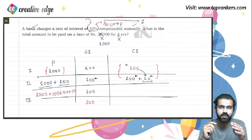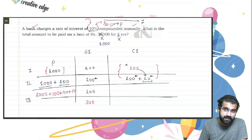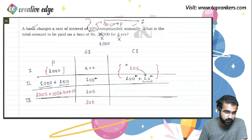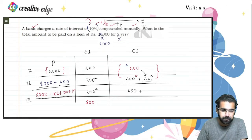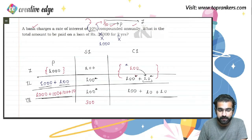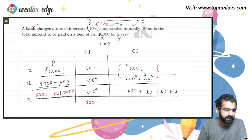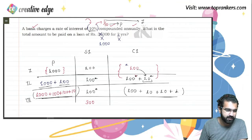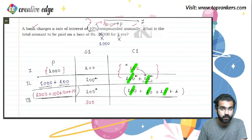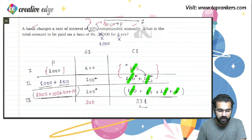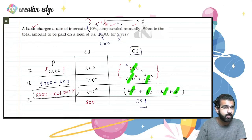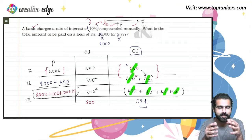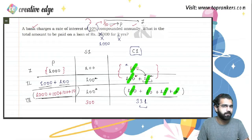The amount is principal plus interest — that becomes the updated principal. In the third year, the interest is: 100 (10% of original 1,000) + 10 (10% of first year's 100) + 10 (10% of second year's 100) + 1 (10% of the 10). So total compound interest over three years is 100 + 100 + 100 + 10 + 10 + 10 + 1 = 331. The total amount is 1,331. That extra 31 over simple interest's 300 is because we applied interest on interest — the core concept of compound interest.